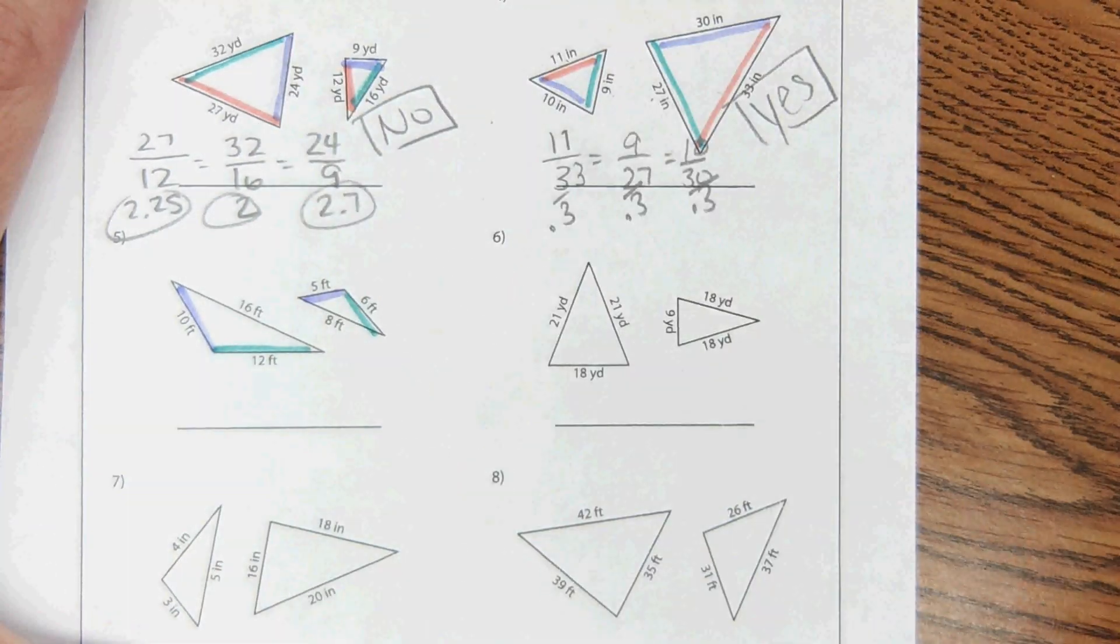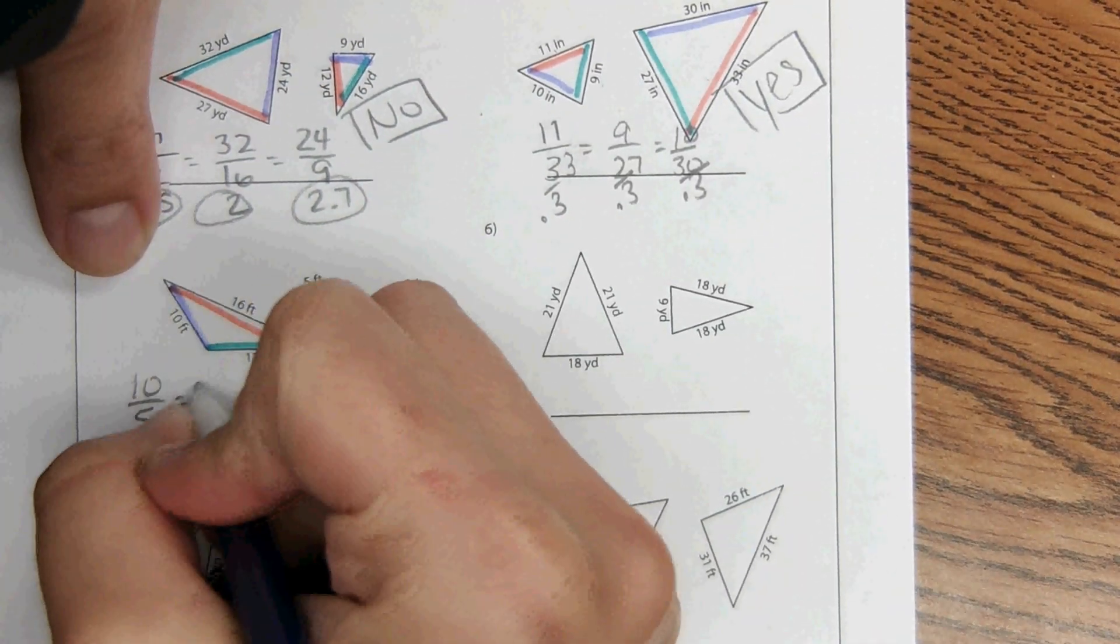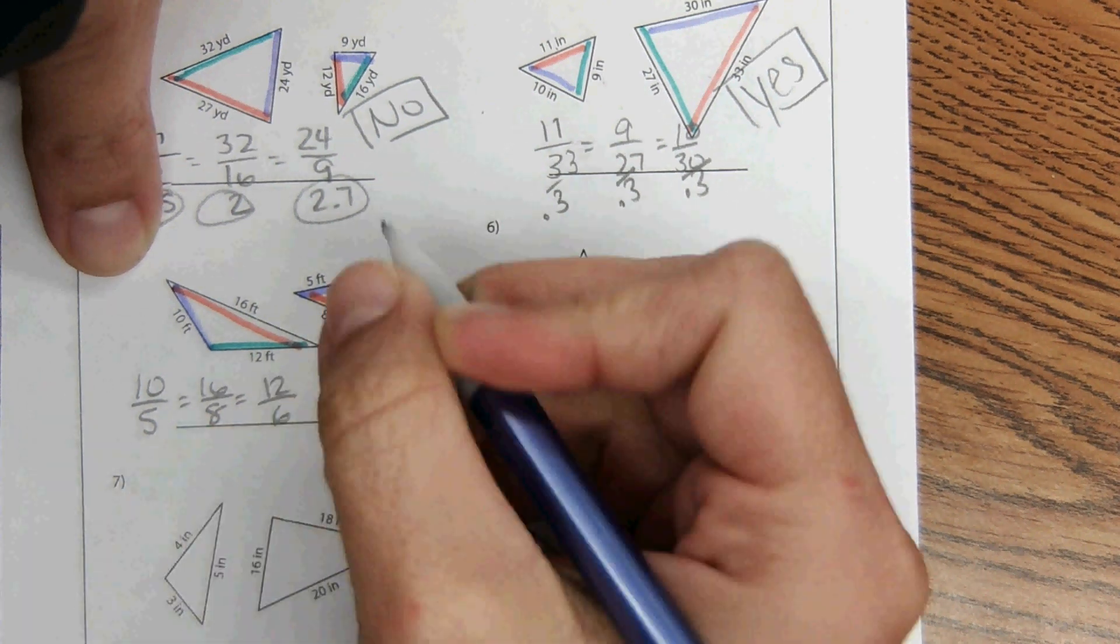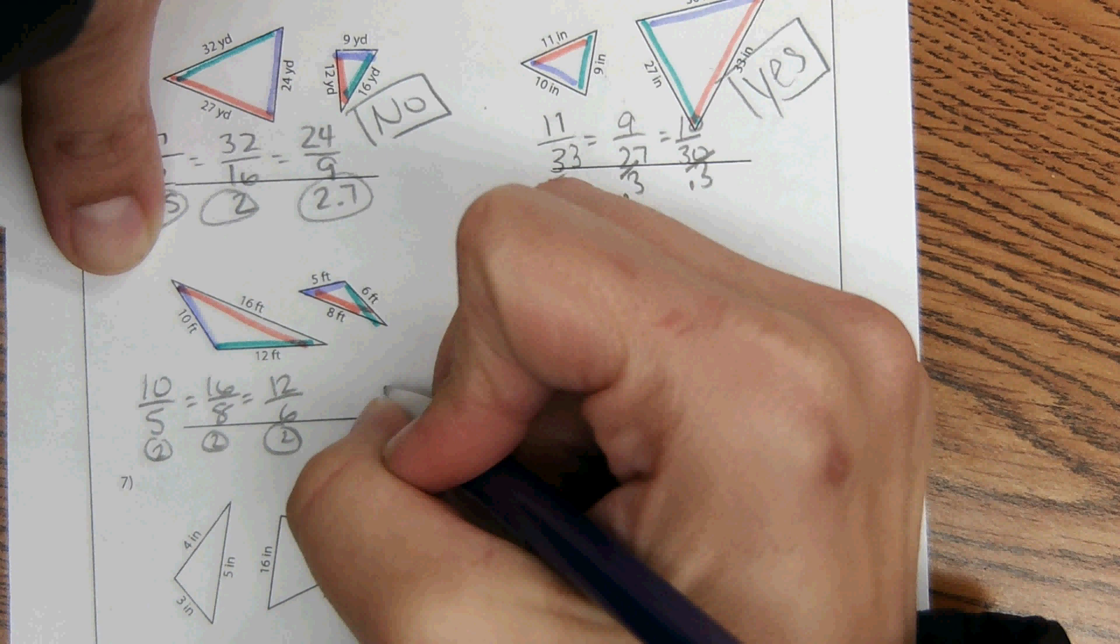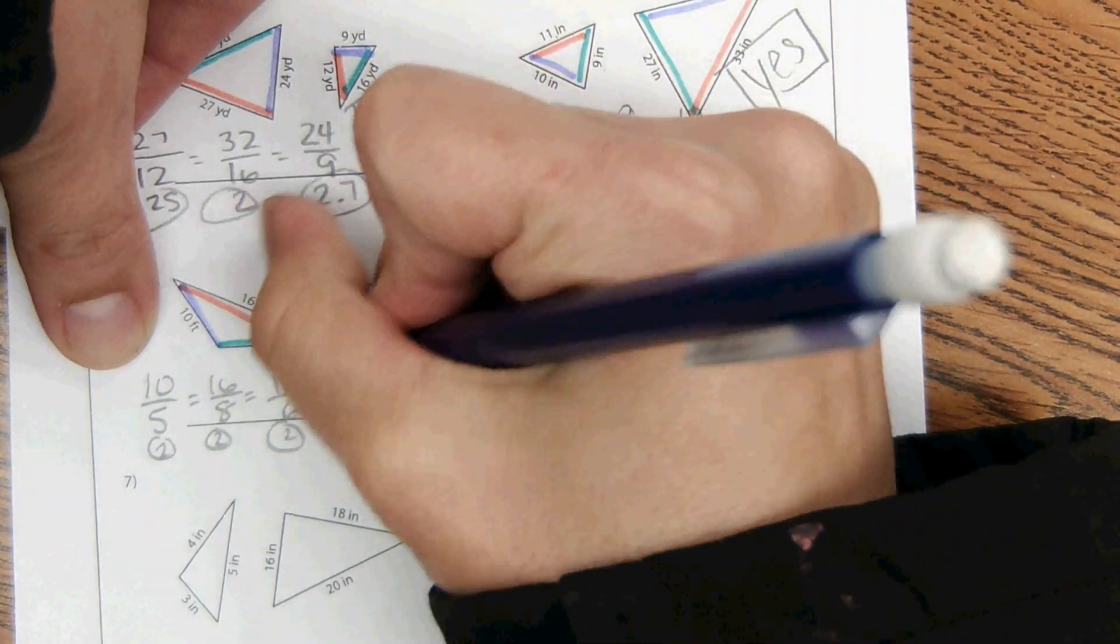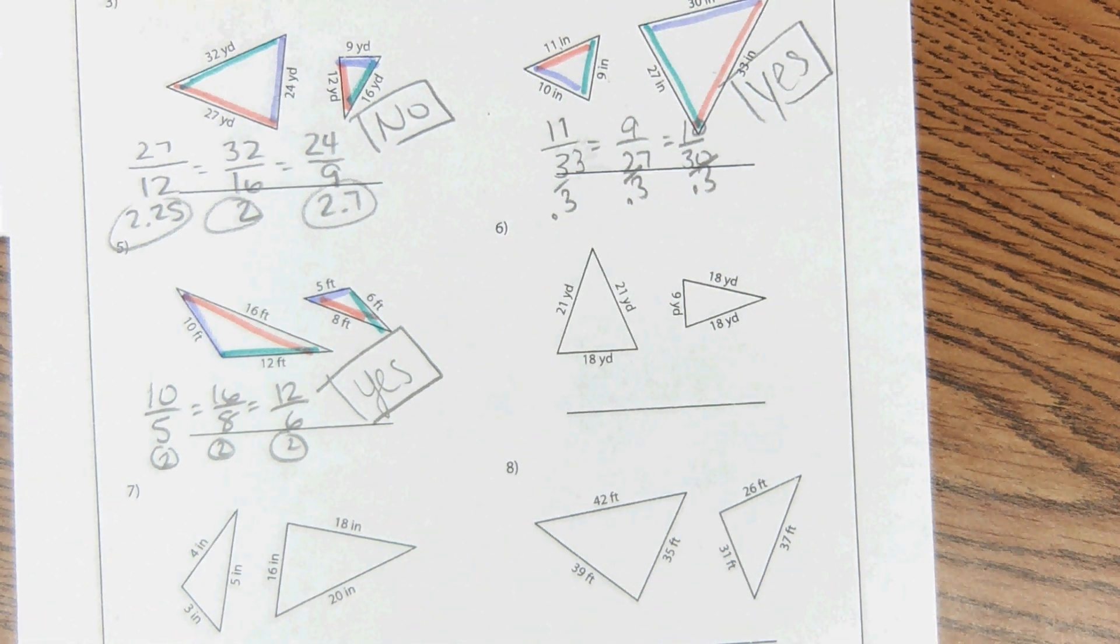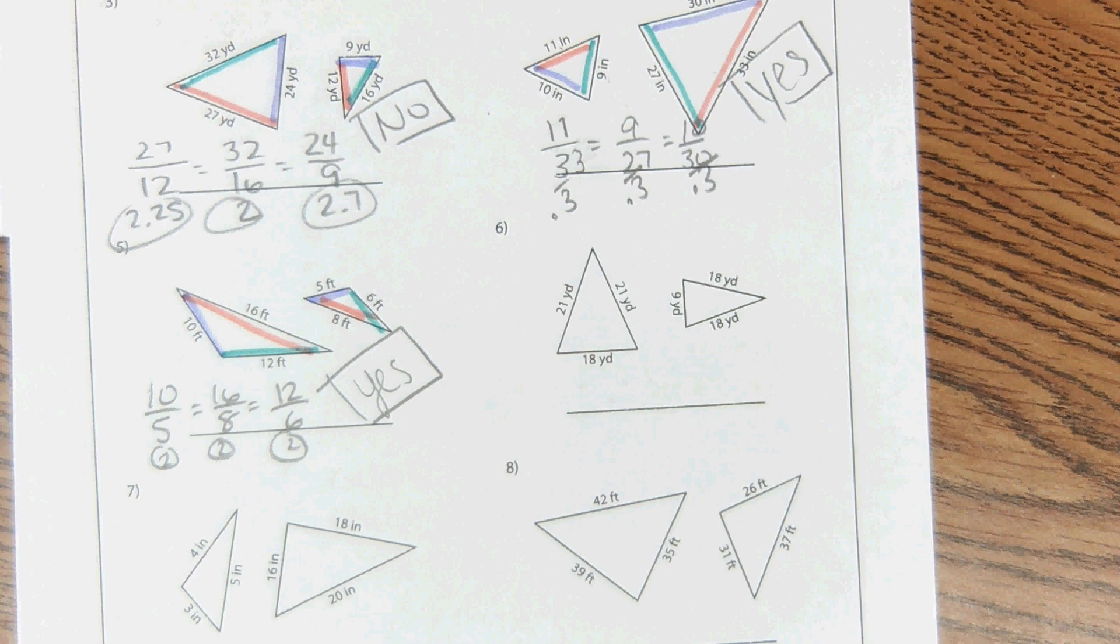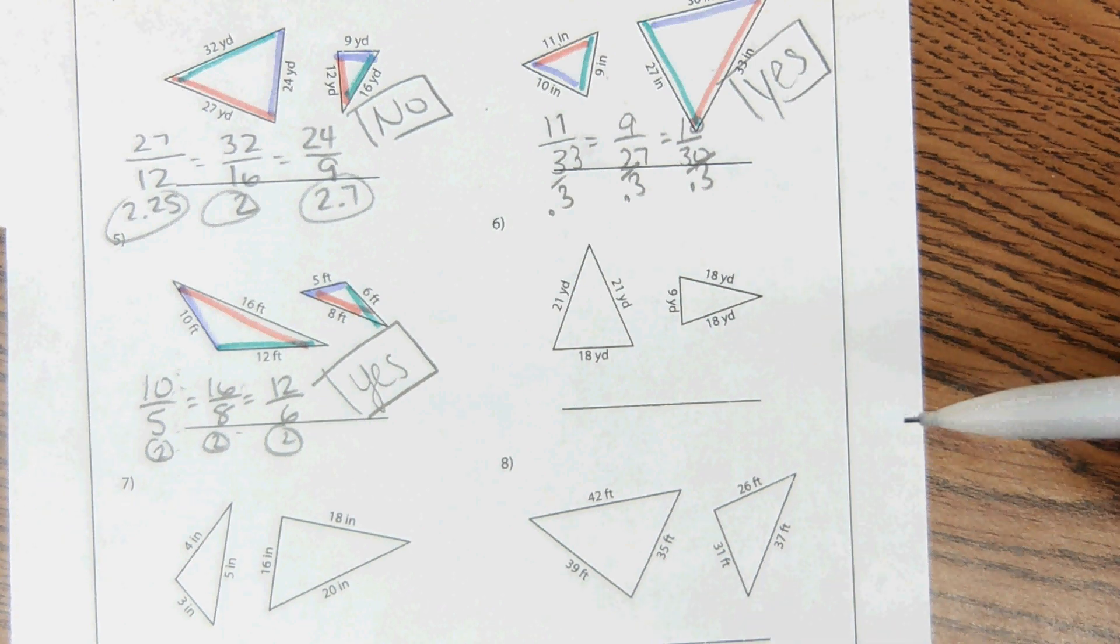Short to short, medium to medium, long to long. They use all the same ratios too, so this would be, yes. Yeah, just like, oh yeah, you can divide by 2. 10 divided by 5 is 2, 16 divided by 8.